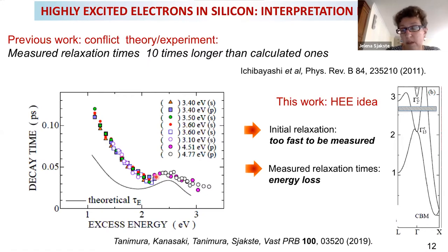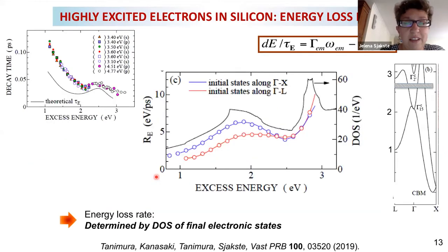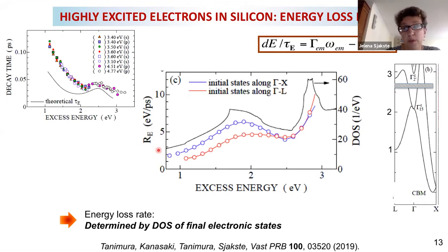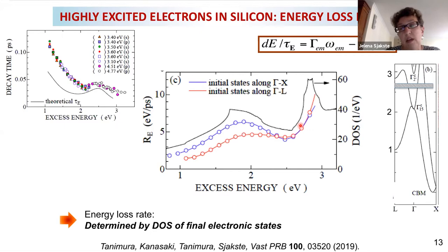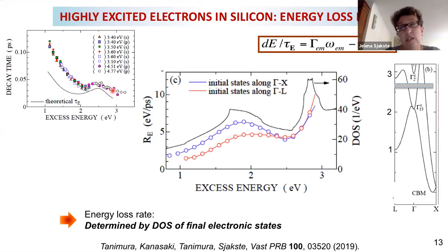That could be the end of the story, but it's not quite. What we calculate is the relaxation rate. The rate of energy transfer from electrons to phonons follows the shape of the electronic density of states. The transition probability, exactly as for the total scattering rate, is determined by the shape of the DOS. Even some peaks can be reproduced experimentally — you see that this dip is related to this peak in the relaxation time — and so it's electron intervalley scattering which is responsible for this process.